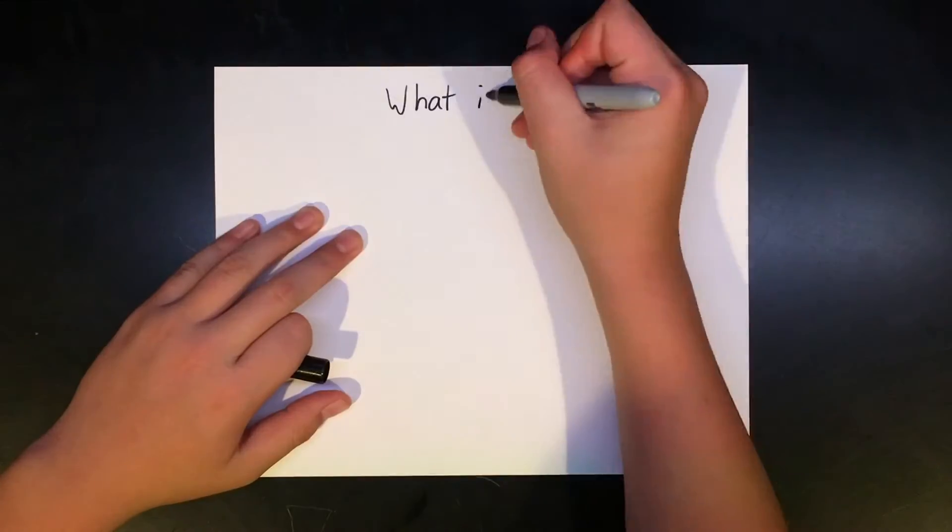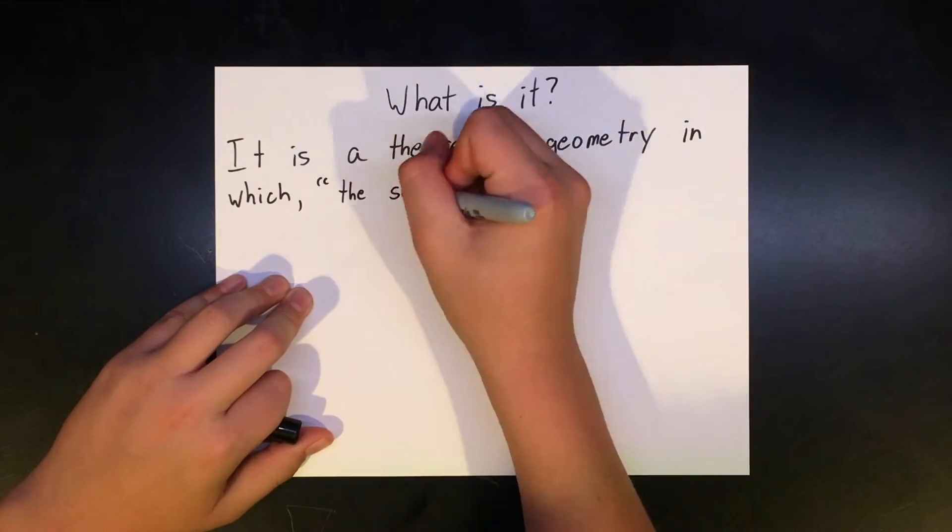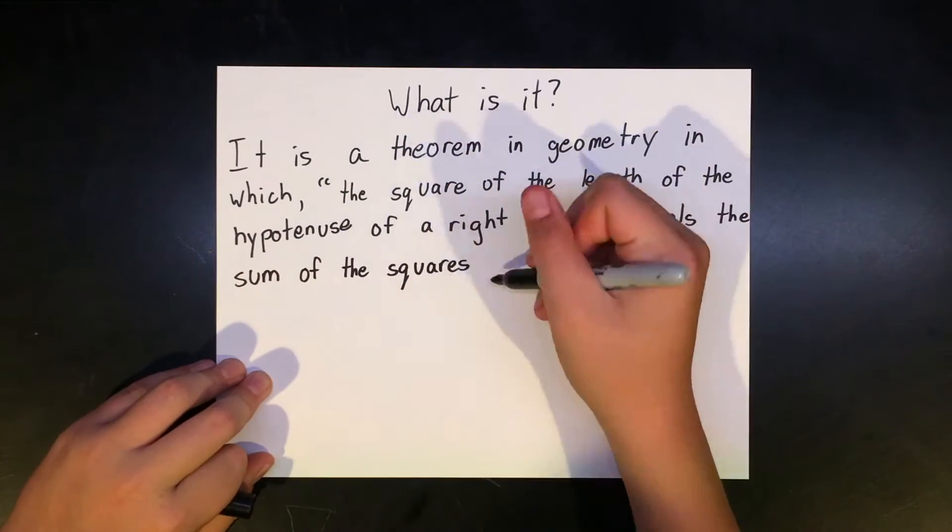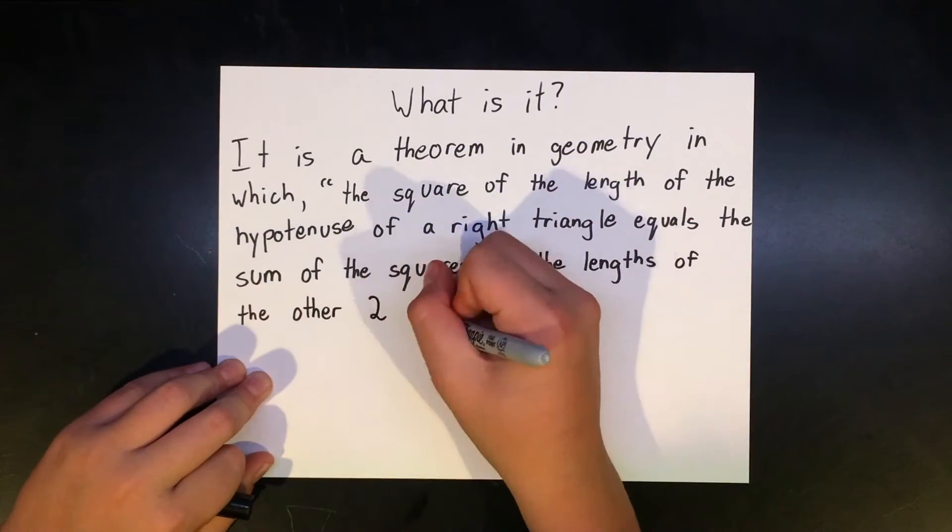Merriam-Webster defines the Pythagorean theorem as a theorem in geometry in which the square of the length of the hypotenuse of a right triangle equals the sum of the squares of the lengths of the other two sides.